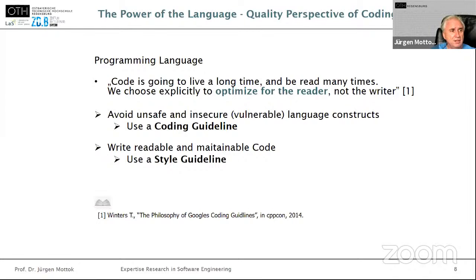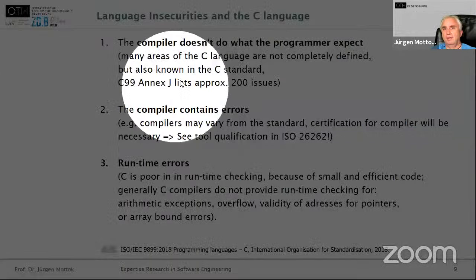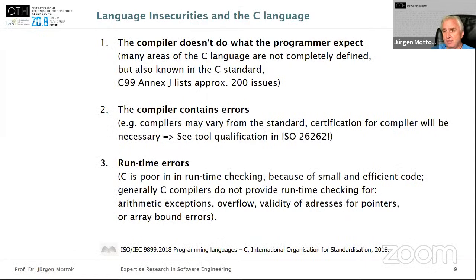Why do we do eye tracking analysis of code understanding and code quality? Code review is an essential part of a development process. We do it because the widely used programming language C for embedded systems has insecurities and problems. The problem starts with the standard — we have the situation that the compiler doesn't do what the programmer expects, because not all is defined in the C standard. It comes from the time when compiler manufacturers could make optimizations by their own competence, and the result is that different compilers can have different results.